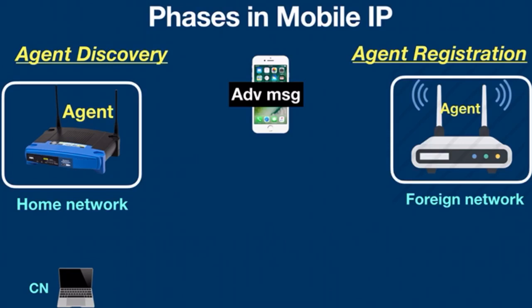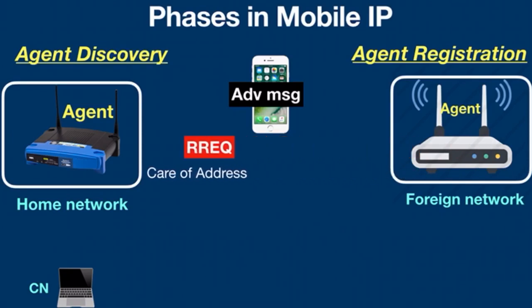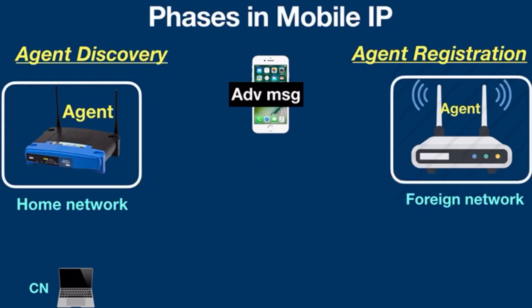The second phase is Agent Registration. After discovering the foreign agent, the mobile node sends a registration request to the foreign agent. The foreign agent then sends the registration request to the home agent along with the care-of address. The home agent sends a registration reply to the foreign agent, which then forwards the reply to the mobile node, completing the registration process.